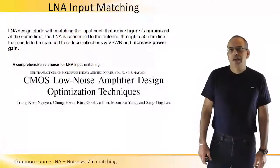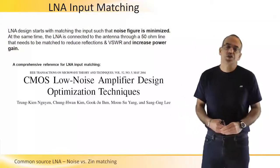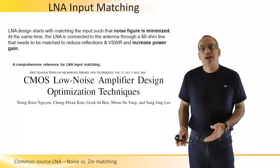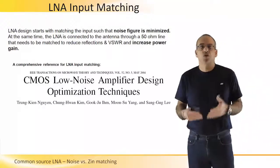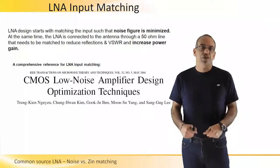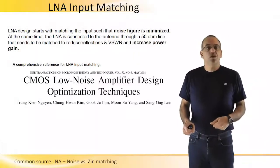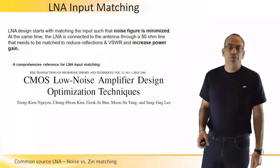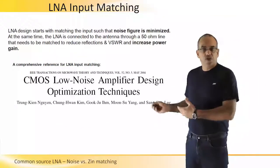For LNA input matching, the LNA as the first stage in the receiver must be considered from the input port. The noise figure needs to be minimized, and at the same time the LNA is connected to the antenna requiring a 50 ohm or 100 ohm differential match to minimize reflections at the RFIC input and maximize power gain. A good reference for this approach is a 2004 Microwave Theory and Techniques paper that will be used throughout this tutorial.